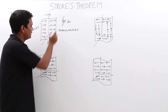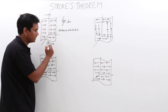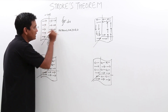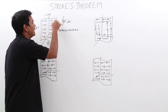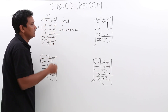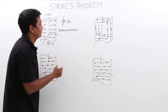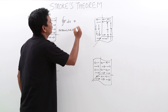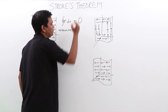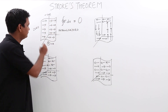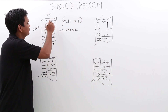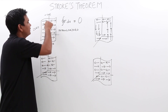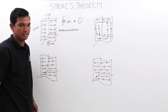So, f dot dr for this figure, where these are the field lines f over this line integral, it would be 0 because the positive and negative quantities will get cancelled out.